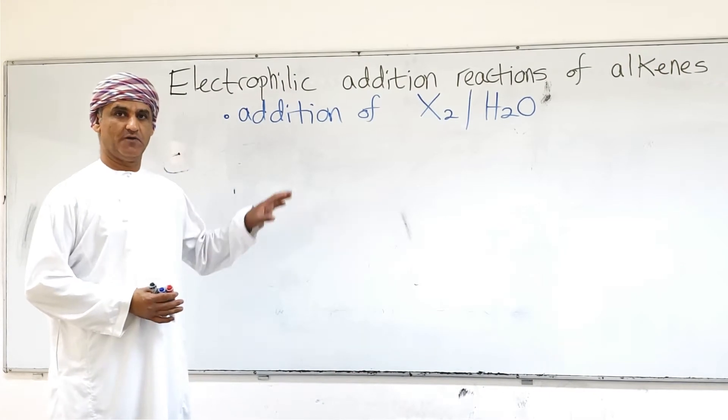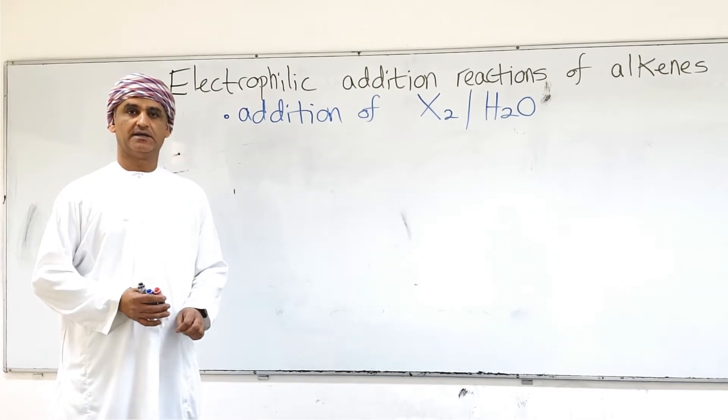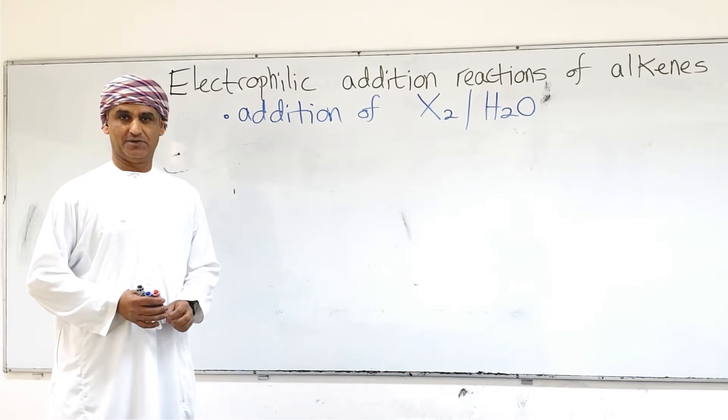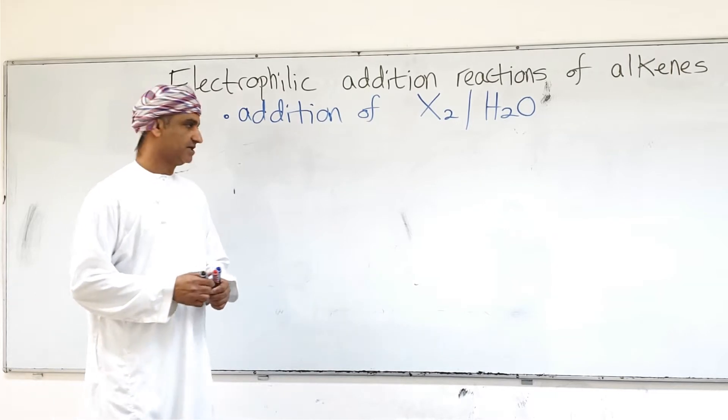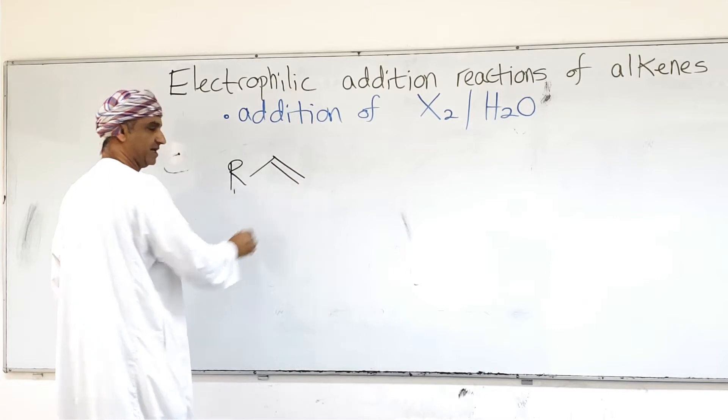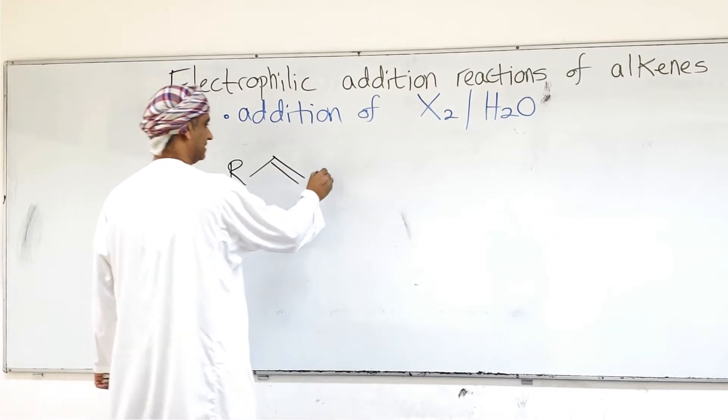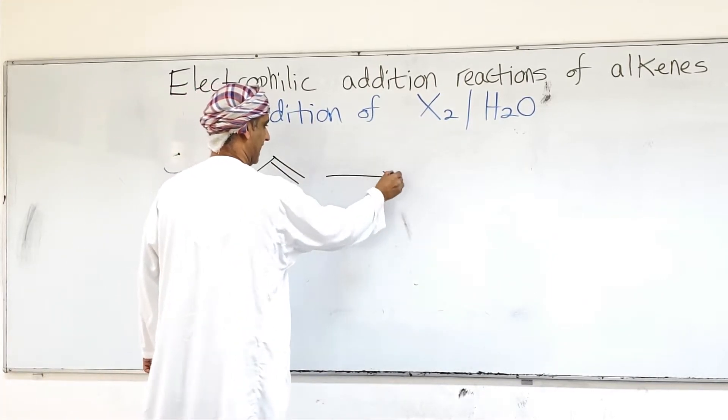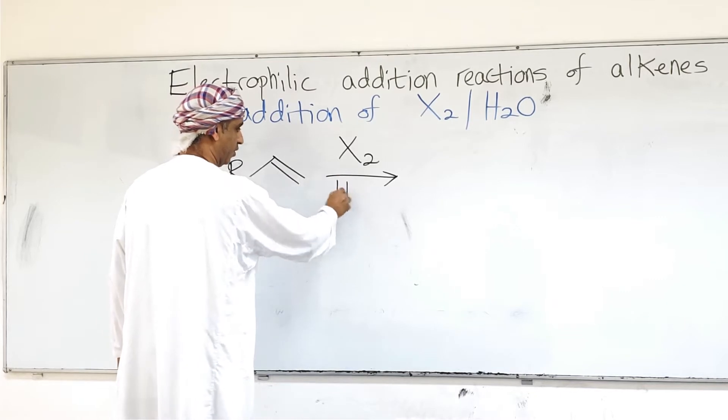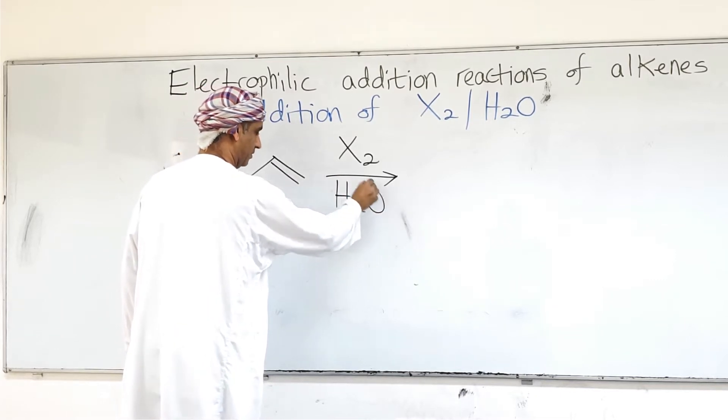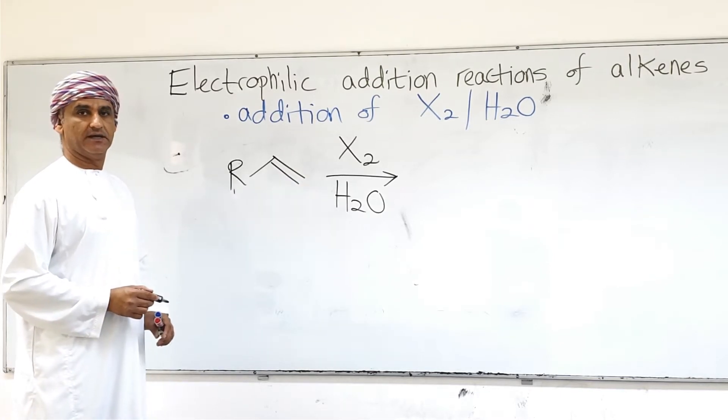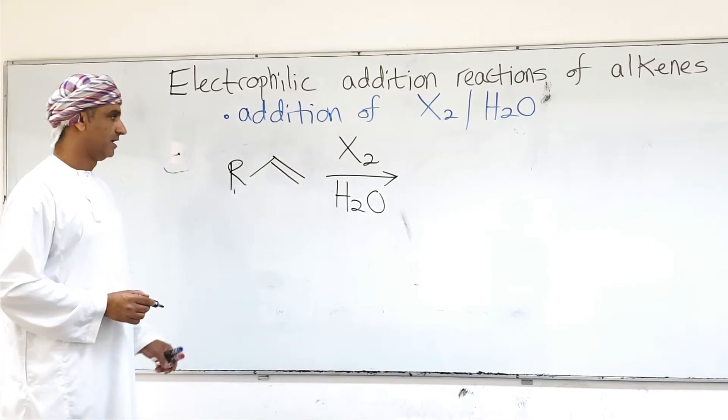Another example of electrophilic addition reactions to alkenes is the addition of X2 and H2O. We can actually show the reaction by the following general scheme. This is the general structure of alkenes, and we can add X2, a halogen, in the presence of water, H2O.